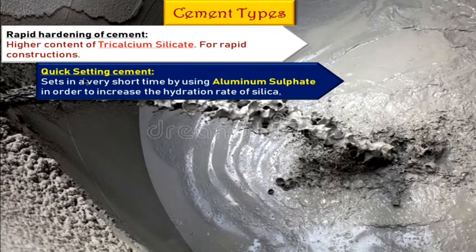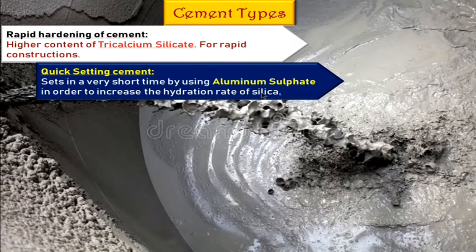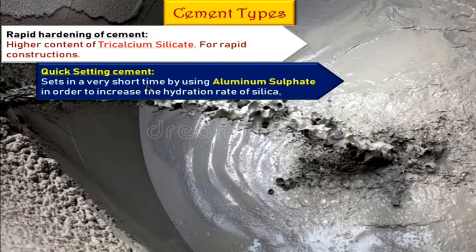Next, quick settling cement. This is similar but it sets quickly — the setting time is very short. This is achieved by using aluminum sulfate, which increases the hydration rate of silica, increasing silica's capability to absorb water. These cements are used in submerged or underwater constructions, such as during the rainy season.